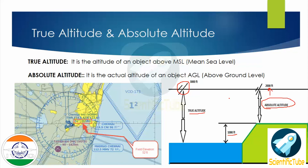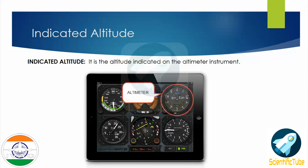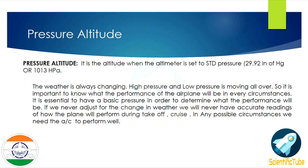Next is indicated altitude. Indicated altitude is the altitude indicated on the altimeter instrument. Here we have the altimeter instrument — whatever QNH we set here, the value of the altitude reflected on this altimeter is the indicated altitude.